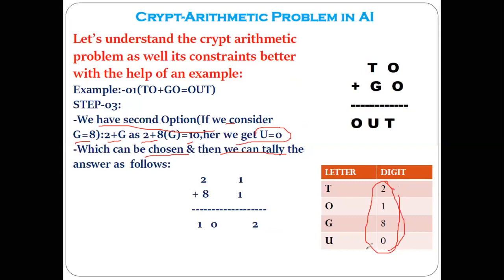Now finally we come to the tally, which will give you the idea about the last rule — the result should satisfy the predefined arithmetic rules. We verify: 1, 0, 1, 0, 2, giving us 5. Then and only then can we say the cryptarithmetic problem has been solved successfully.